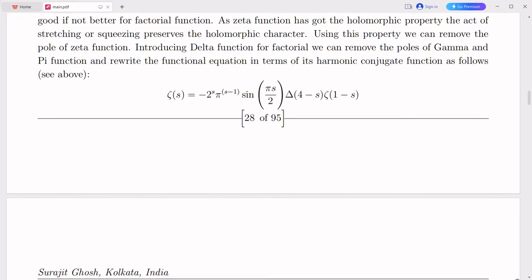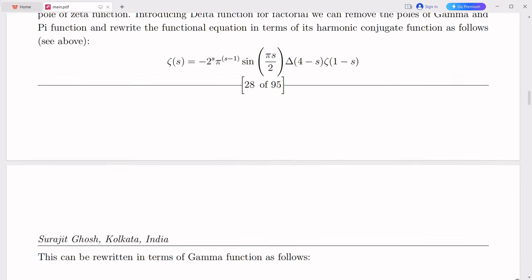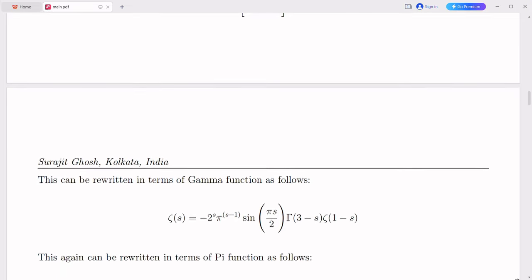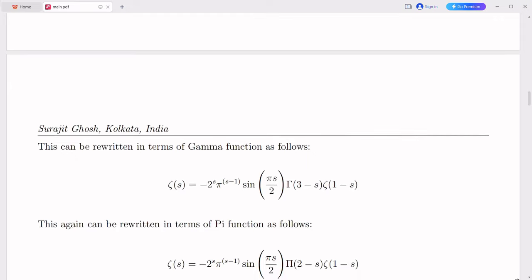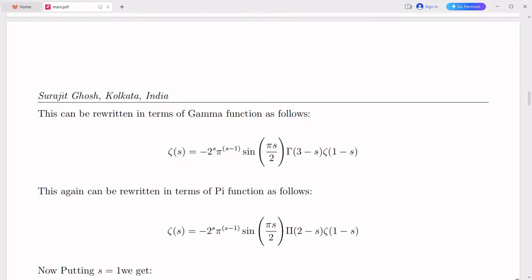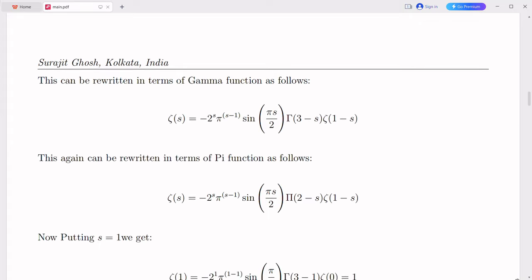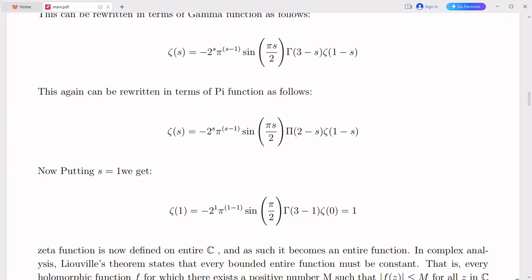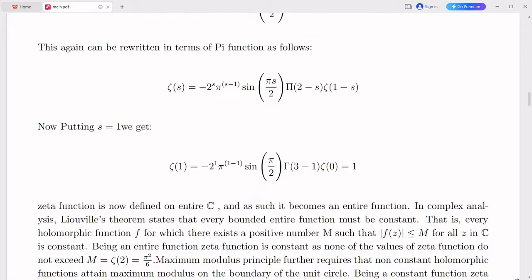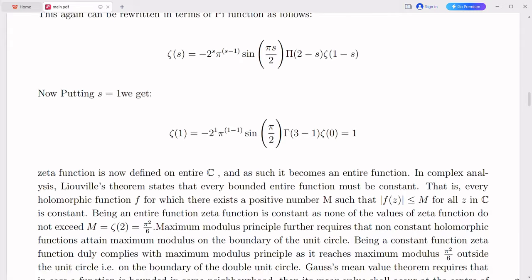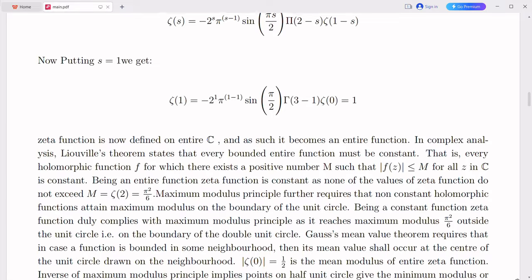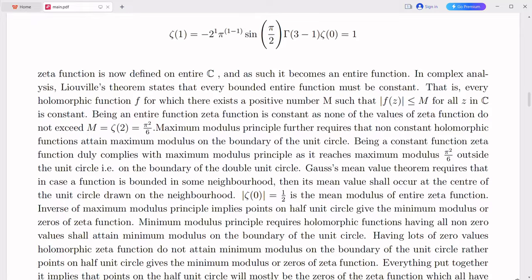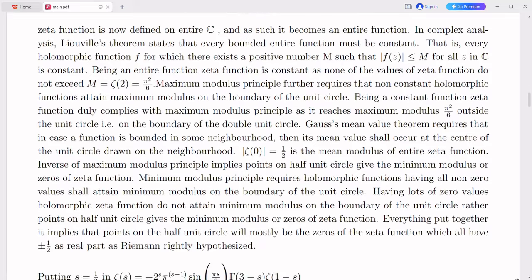Quantum computers rely on the principles of quantum mechanics and utilize quantum bits or qubits to perform computations. The mathematics associated with quantum computing involves complex linear algebra and quantum algorithms. Complex numbers are integral to representing quantum states, quantum gates, and quantum operations. If imaginary numbers were brought down to the real number line, it would impact the mathematical foundations of quantum computing. The use of complex numbers would remain essential for representing and manipulating quantum states, as well as performing quantum operations and simulations. Extending the real number line might lead to the development of new mathematical techniques and algorithms for quantum computations, enhancing the efficiency and capabilities of quantum computers.